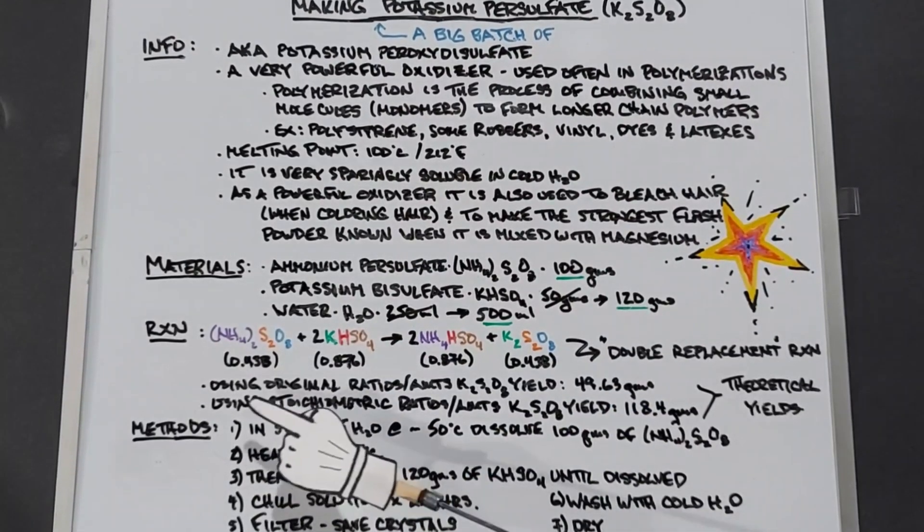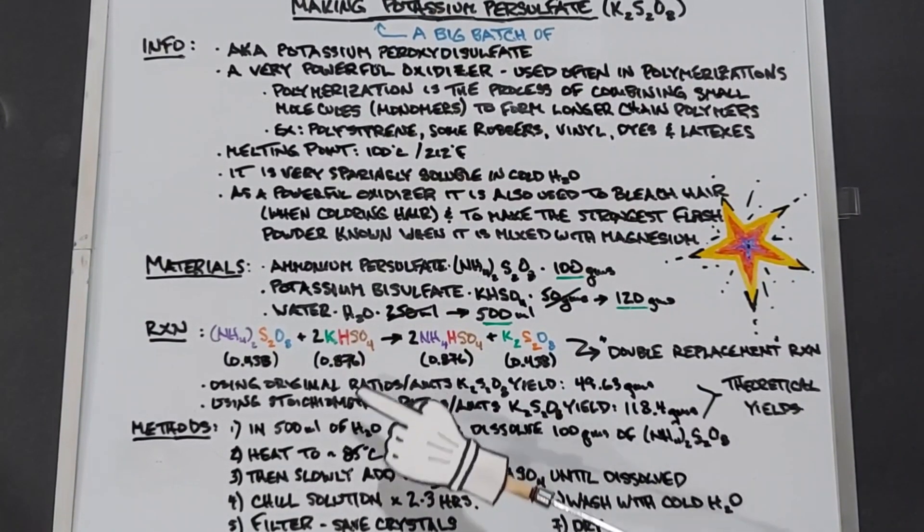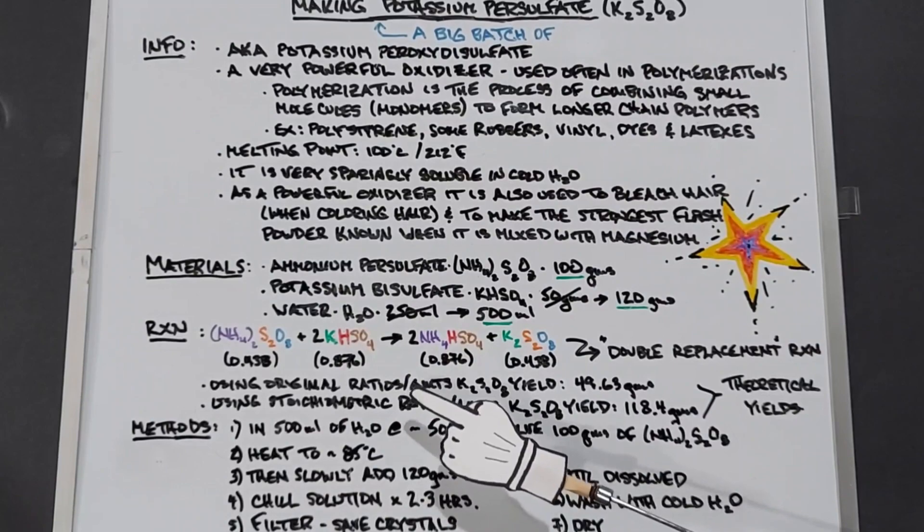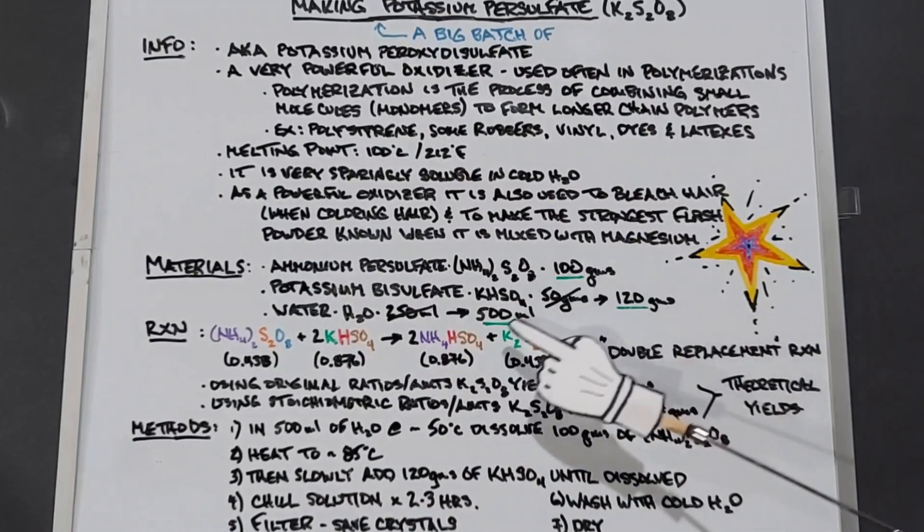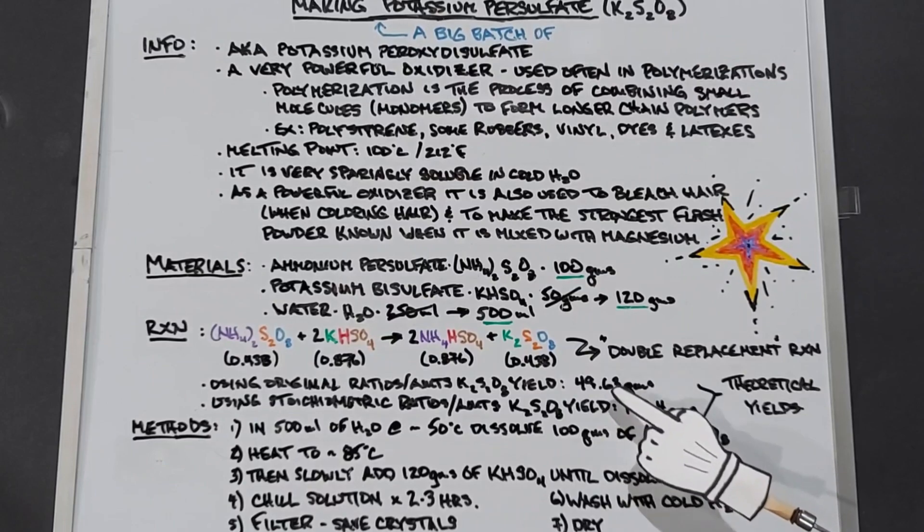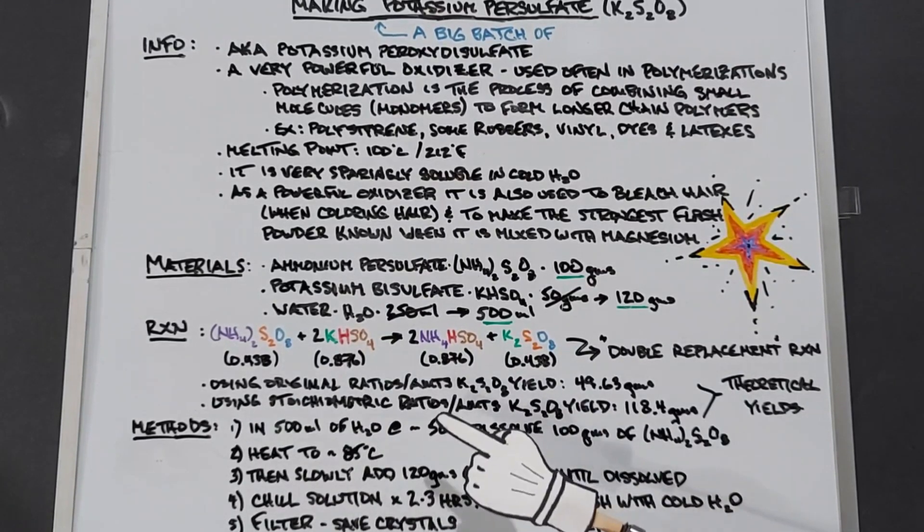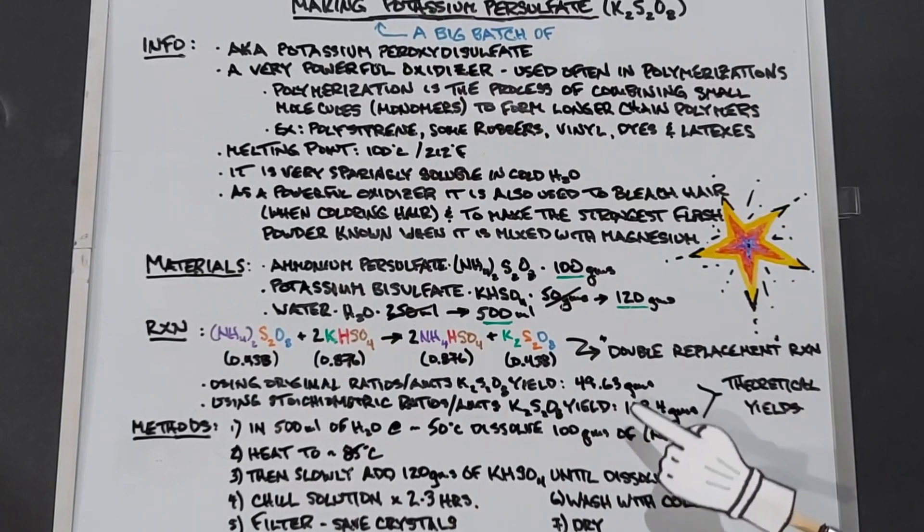Going over some of the other changes, I determined what the theoretical yields would be. For my original experiment, the ratios and amounts that I used, the theoretical yield should have been 49.63 grams. But using the stoichiometric amounts and ratios, the theoretical yield jumps to 118.4 grams, so a significant jump.